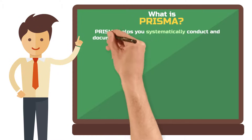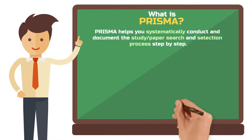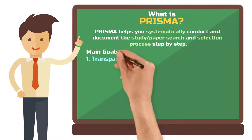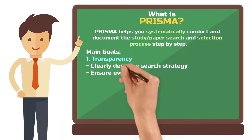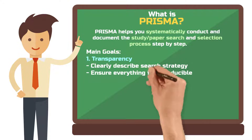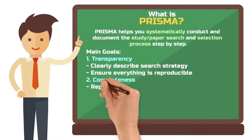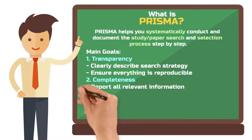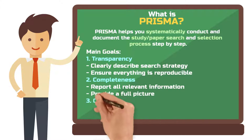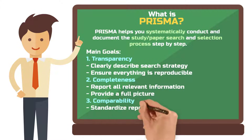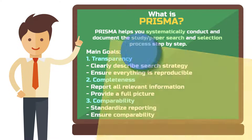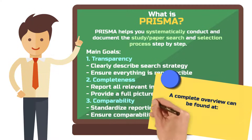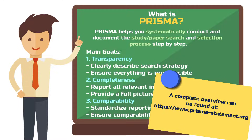PRISMA guides you through the systematic search process step by step and ensures you document all of it thoroughly. The main goals of PRISMA are: transparency — ensuring that your search is clearly and rigorously described so that other researchers can replicate and verify your study; completeness — all relevant information must be reported to give readers a full picture of your literature search; and comparability — by standardizing the reporting, it becomes easier to compare and evaluate different systematic reviews. The PRISMA project also has its own homepage where you find all sorts of resources.